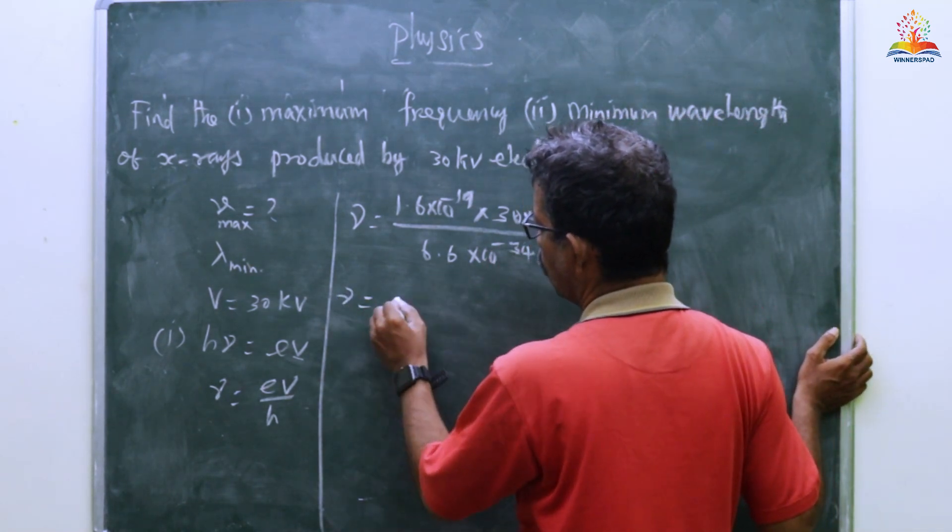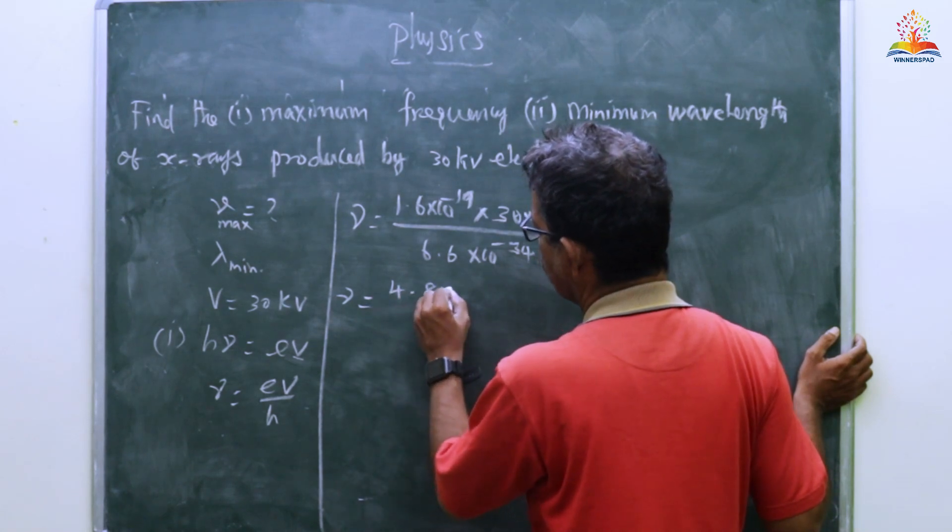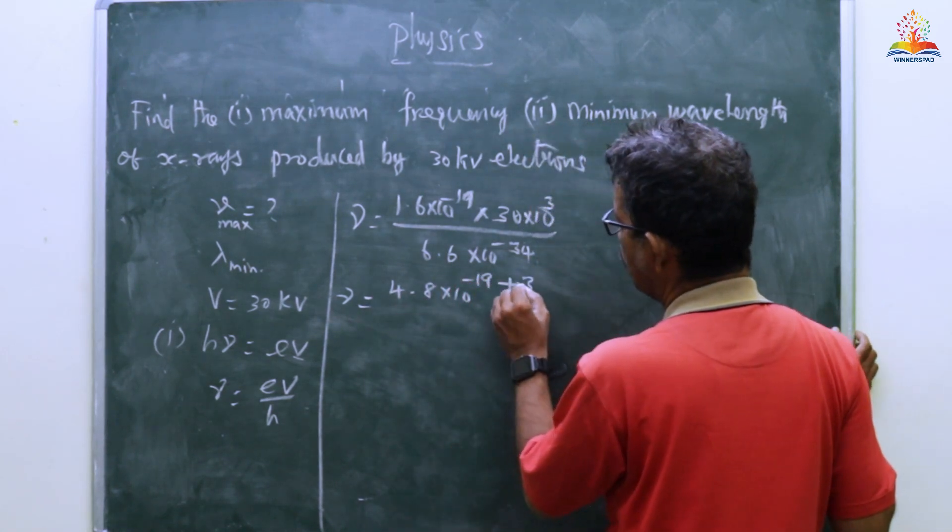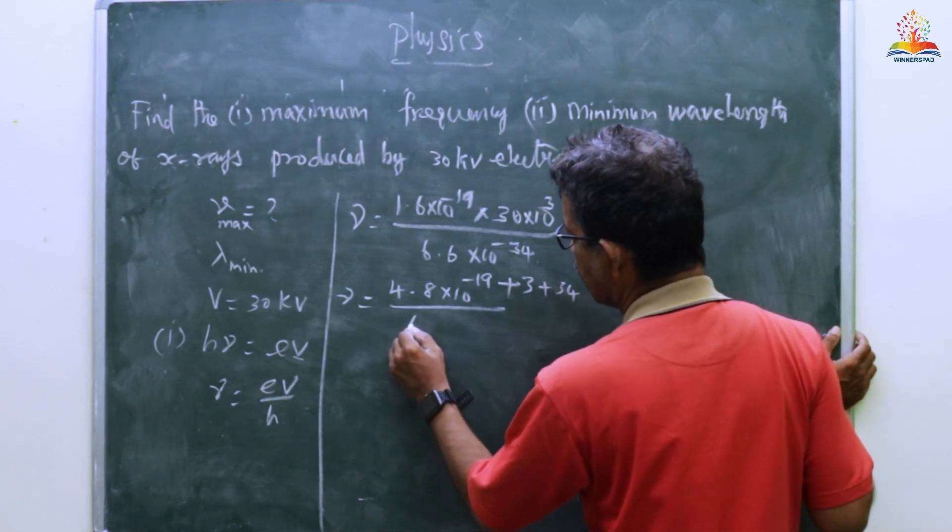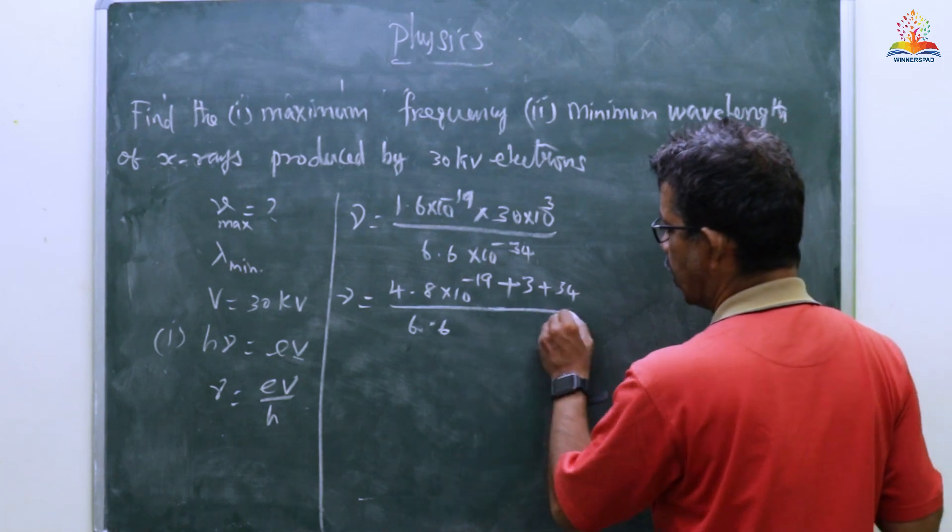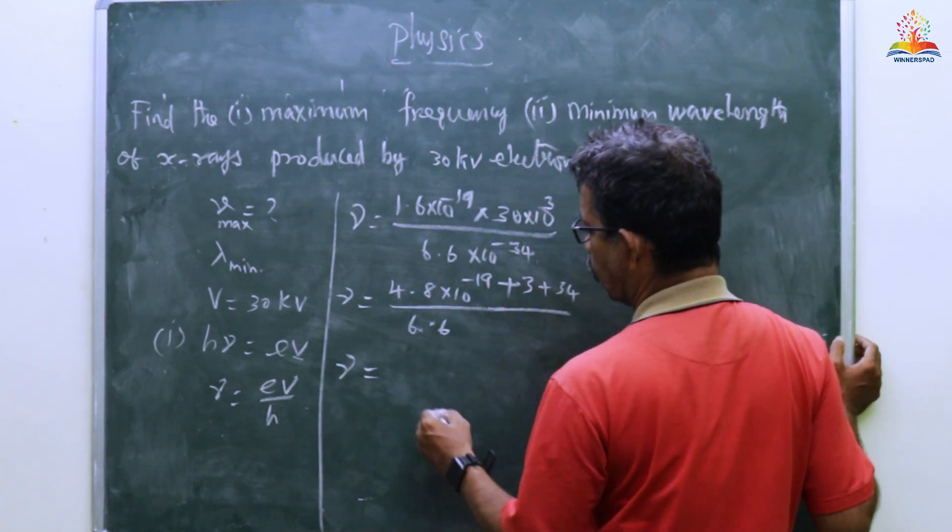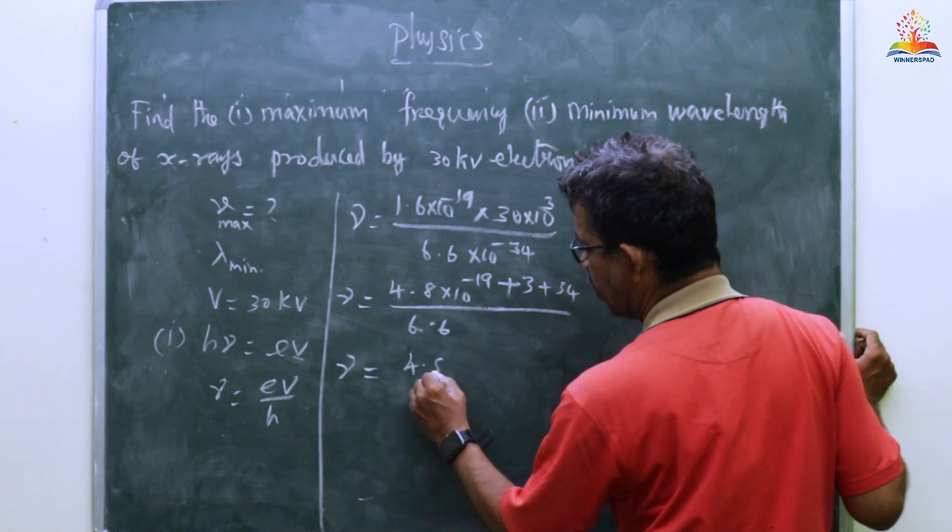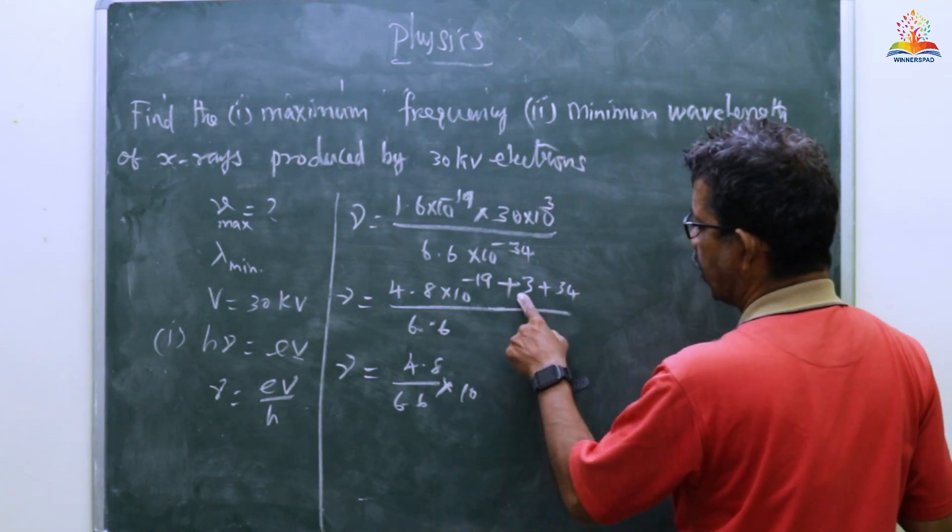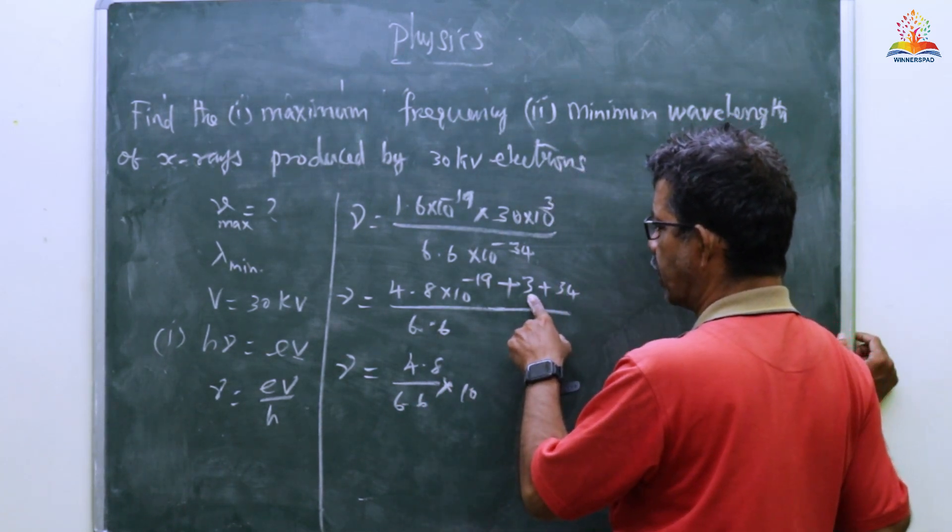ν equals 4.8 times 10 to the power of minus 19 plus 3 plus 34, divided by 6.6. So frequency equals 4.8 divided by 6.6 times 10 to the power of... 34 plus 4 equals 38.